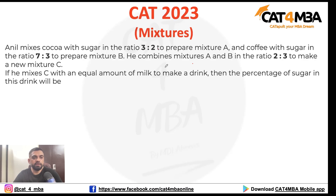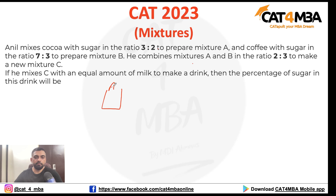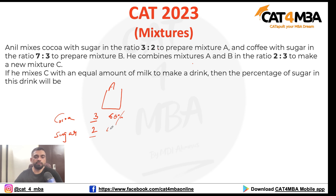Let's look at this question from CAT 2023, based on mixtures and allegations. Anil mixes cocoa with sugar in the ratio 3 to 2 to prepare Mixture A. So there's cocoa and sugar in Mixture A. The concentration of cocoa is 3/5 × 100 = 60%, and the concentration of sugar is 2/5 × 100 = 40%.